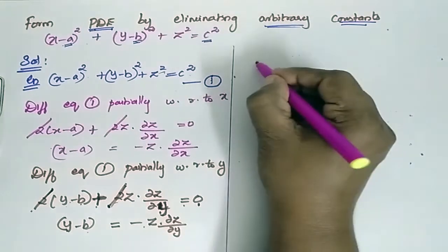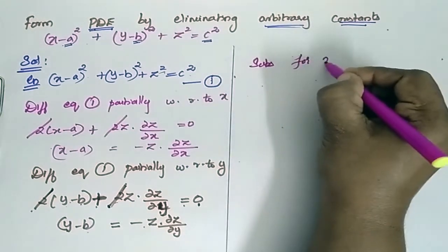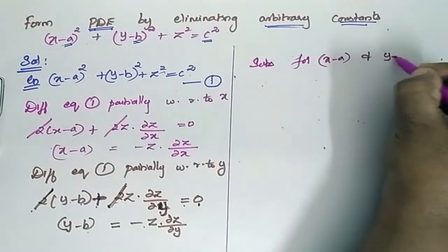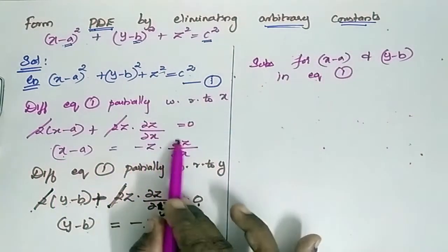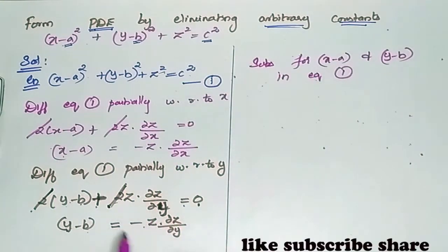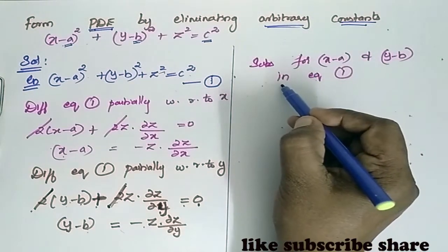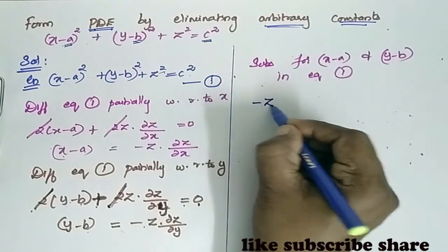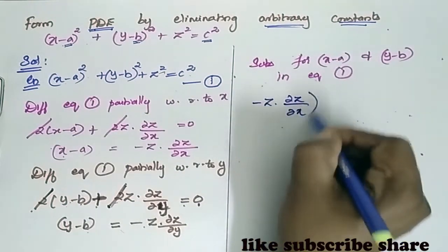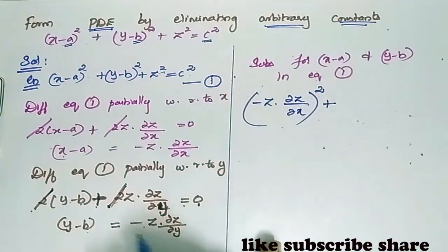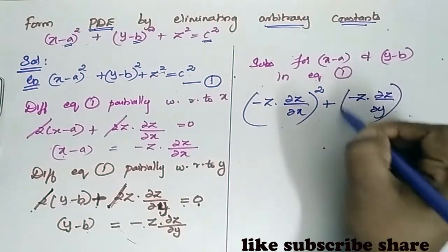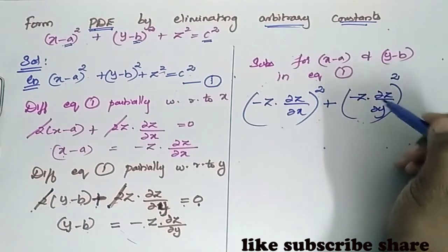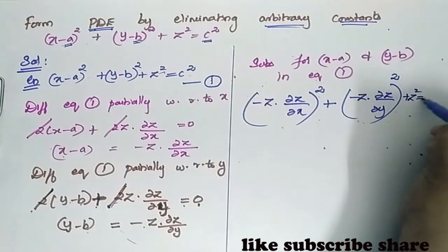Now substitute for (x minus a) and (y minus b) back into equation 1. For (x minus a) we substitute minus z times ∂z/∂x, whole squared. For (y minus b) we substitute minus z times ∂z/∂y, whole squared. So we have: (minus z ∂z/∂x)² plus (minus z ∂z/∂y)² plus z square equals z square.